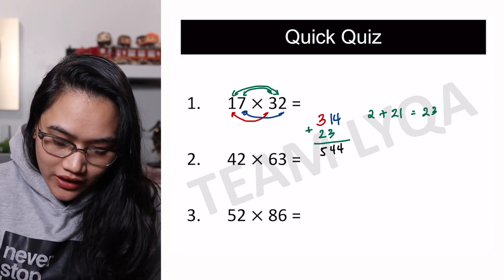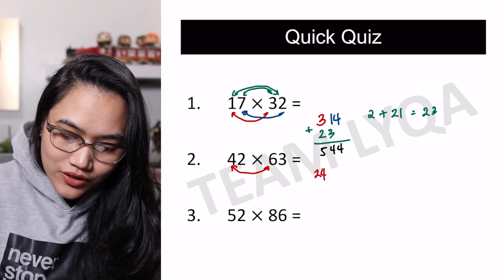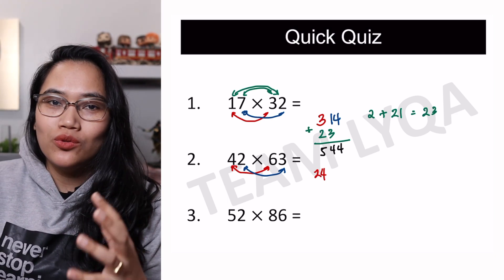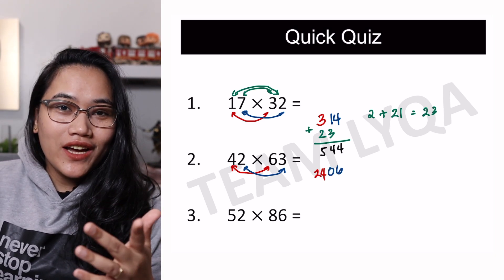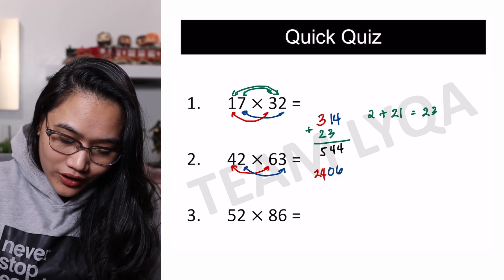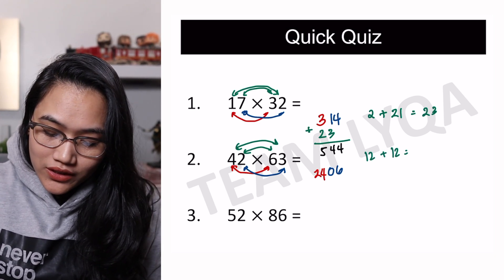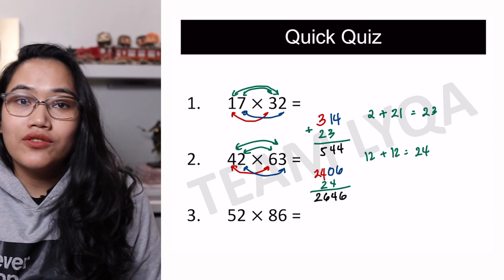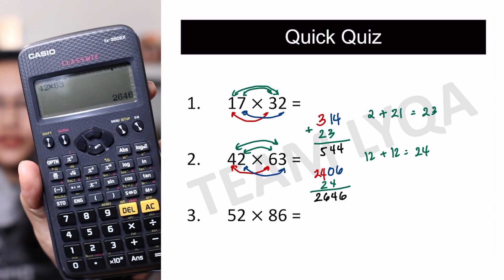Next, 42 times 63. Start with the first digits: 4 times 6 is 24. Then the last digits: 2 times 3 is 6 — and importantly, this should be written as 06, a two-digit number. Now the cross step — outside: 4 times 3 is 12. Inside: 2 times 6 is also 12. So 12 plus 12 is 24. Add that in and we get 2,646. To check: 42 times 63 is 2,646. Correct!